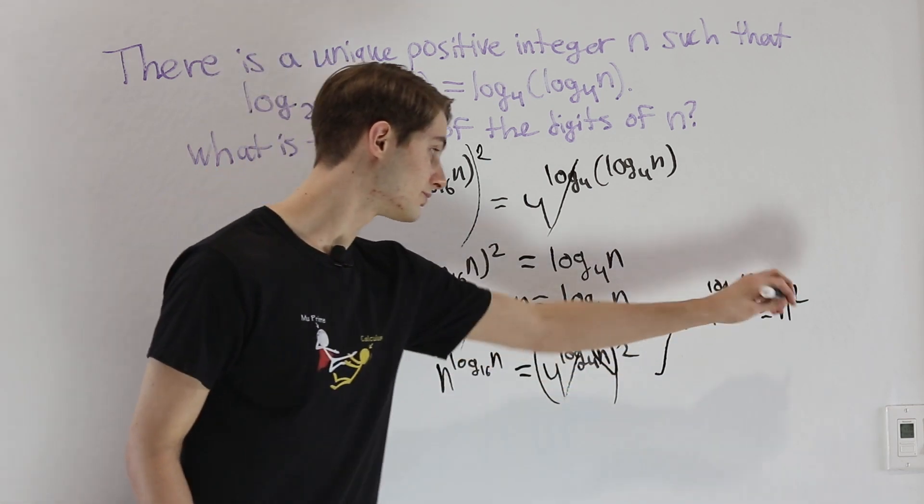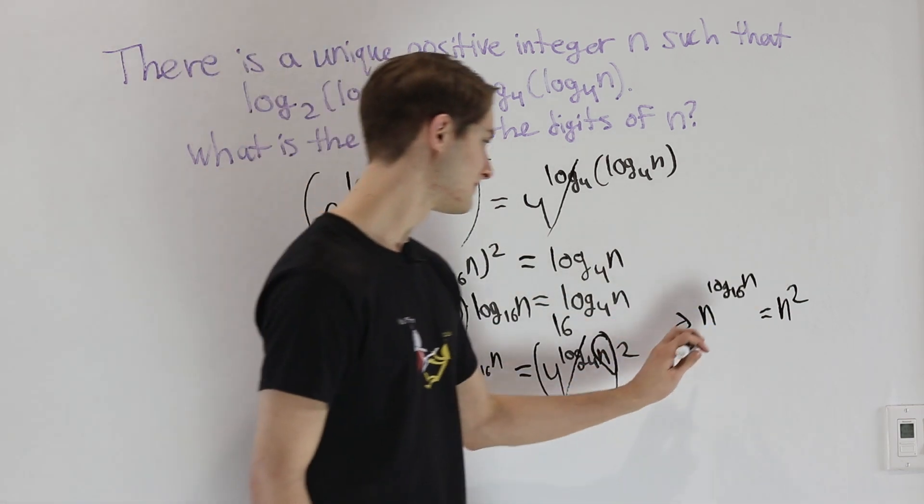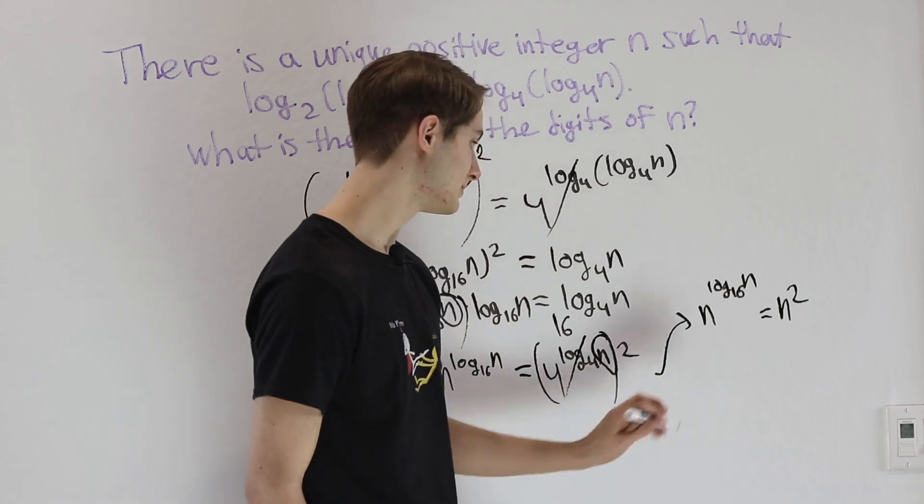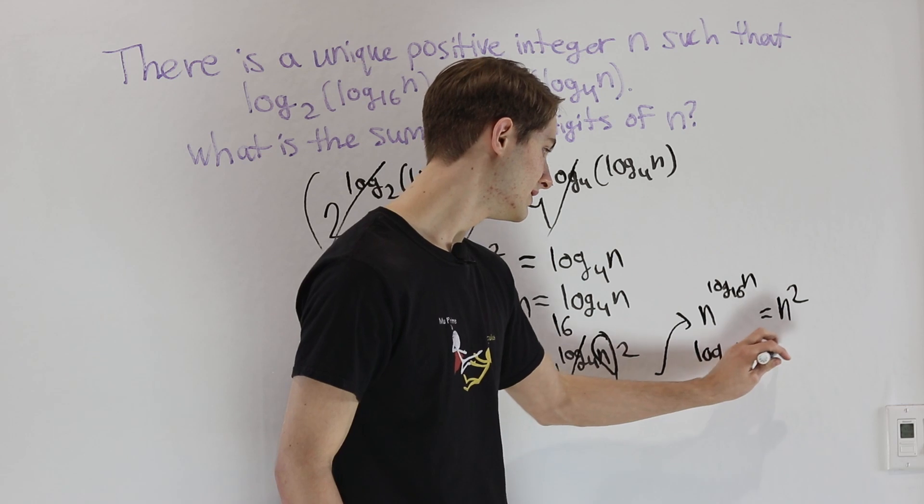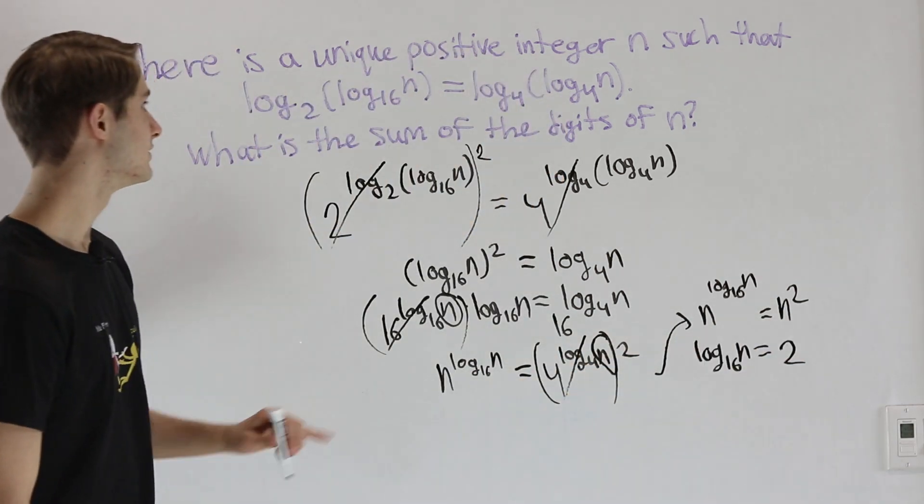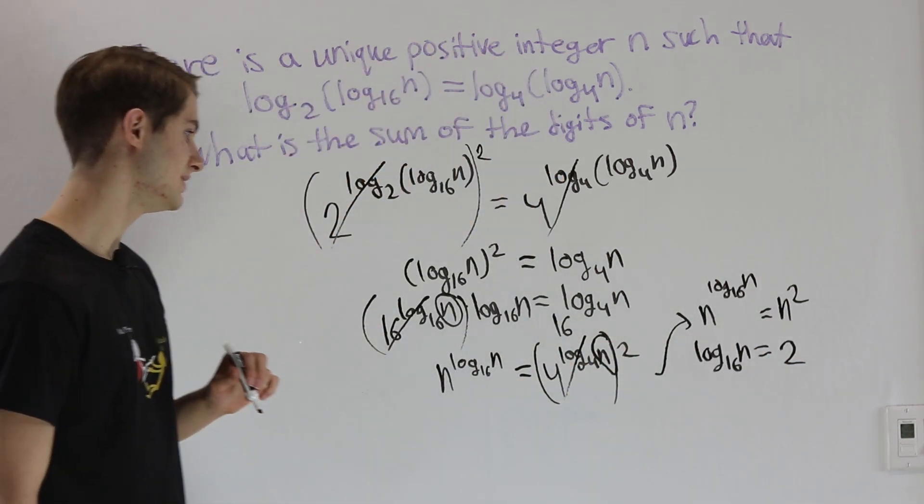This n right here squared - in other words, because the base is the same on both sides, the only way this is true is if log base 16 of n equals 2, since we know n has to be a positive integer.